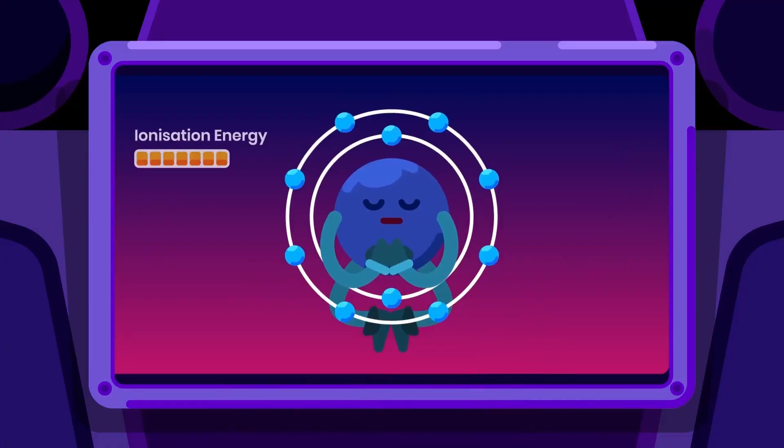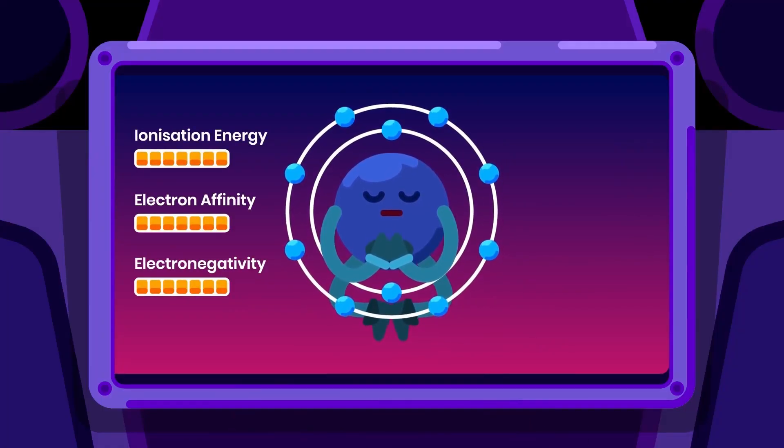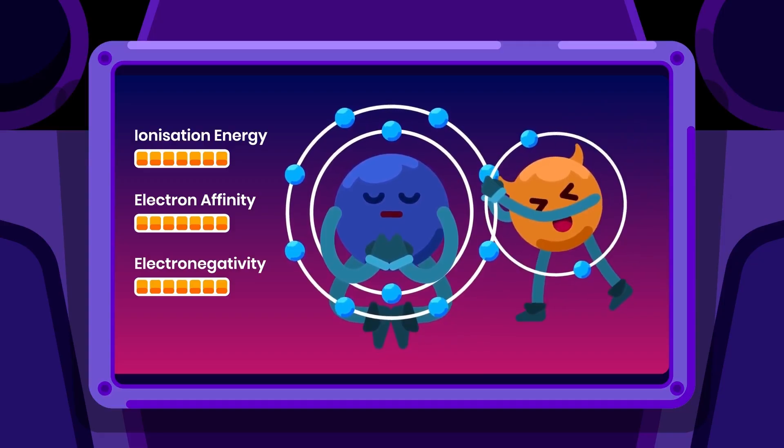So, the more stable an element is, the higher its ionization energy, electron affinity, and electronegativity. Thus, the harder it is to remove its electrons.